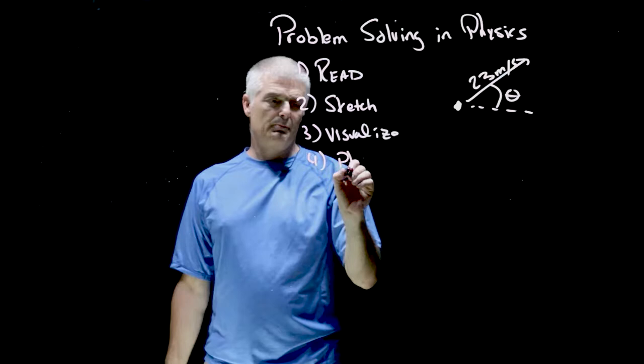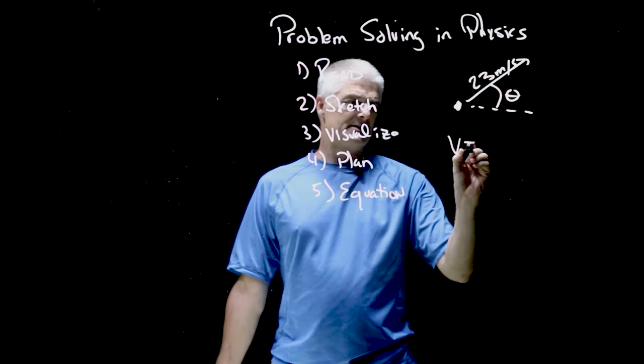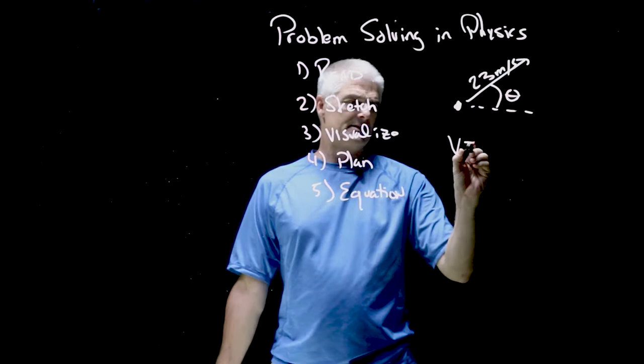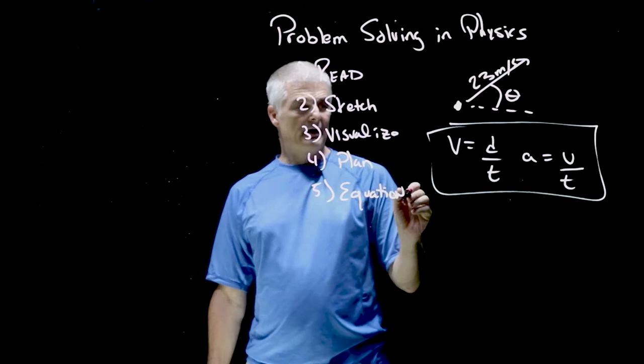Fourth, make a plan. How am I going to do this? Once you've got this, figure out your plan and then there's going to almost always be some kind of equation. There's lots of equations in physics, you know, velocity is distance over time, acceleration is velocity over time. We're going to have all these equations that you're going to get to know, solve them dimensionally, but figure out what equation applies when you are doing the problem.